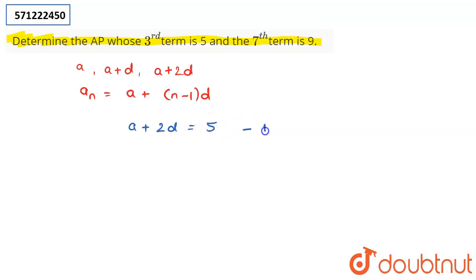The second equation comes from the fact that the seventh term is 9: a+6d=9.